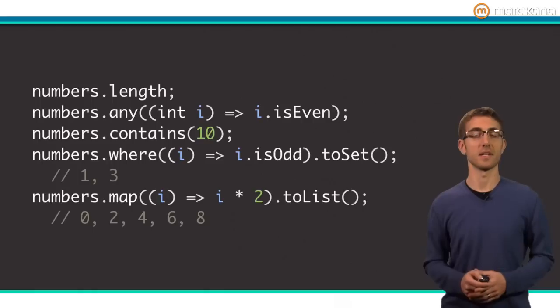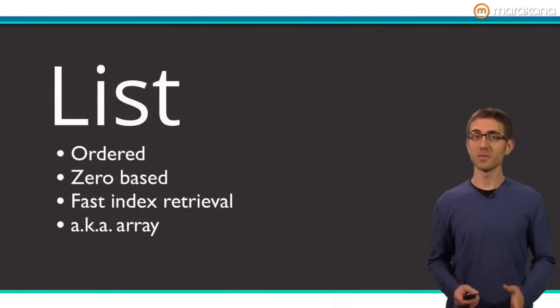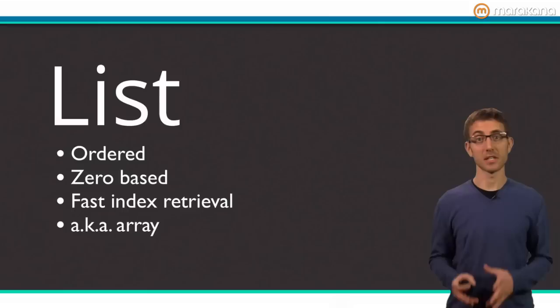There are many more methods on iterable, and I encourage you to check out the docs to learn more. Let's move on to some collection classes. While the iterable interface defines read-only behaviors on a group of items, the collection class extends iterable with the ability to add and remove items. List, set, and queue are all collections, so let's start with list.